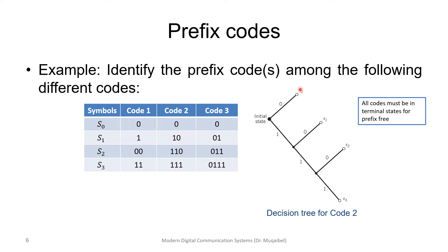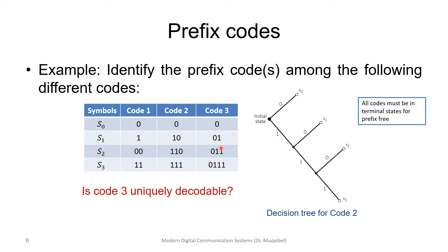If all codewords are terminal states with no branching after them, we call it a valid prefix-free code — this is proof they are prefix-free. Code 3 is uniquely decodable, meaning every symbol has a unique code, but it is not prefix-free because zero is the prefix of other codewords. Since it's not prefix-free, you cannot decode instantaneously — you have to wait and parse all the codewords properly.